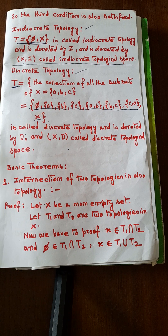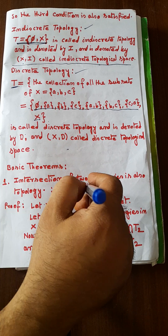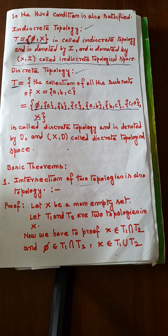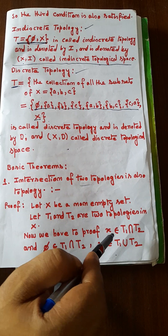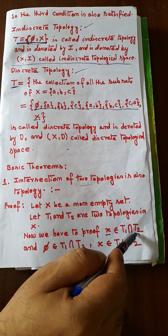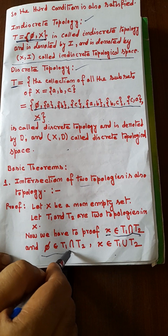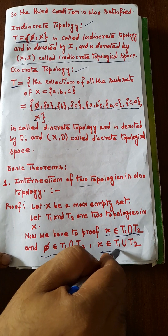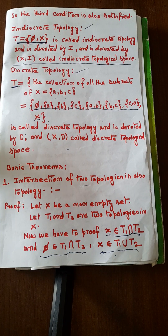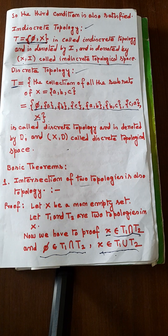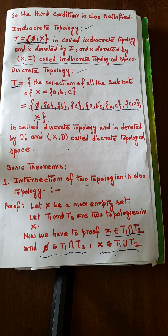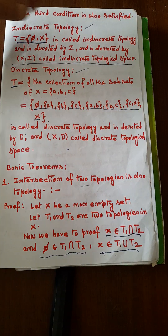Now there are two basic theorems of topology. The first is: the intersection of two topologies is also a topology. Let X be a non-empty set and let T1 and T2 be two topologies on X. We have to prove that T1∩T2 is also a topology by showing the three axioms — that φ∈T1∩T2, X∈T1∩T2, and the union and intersection conditions are satisfied.